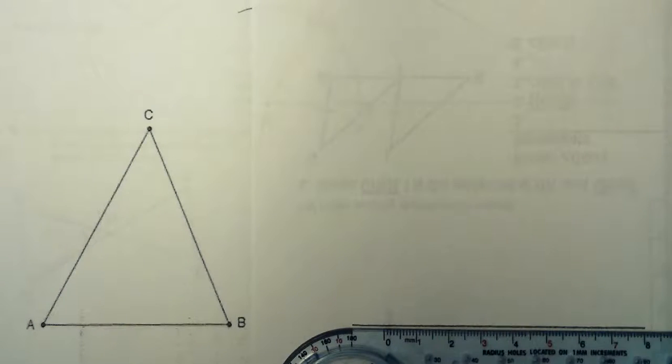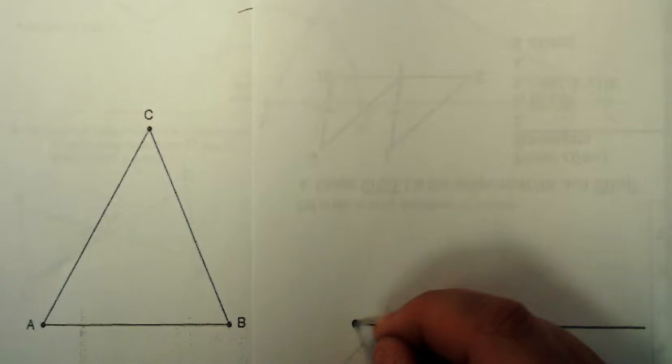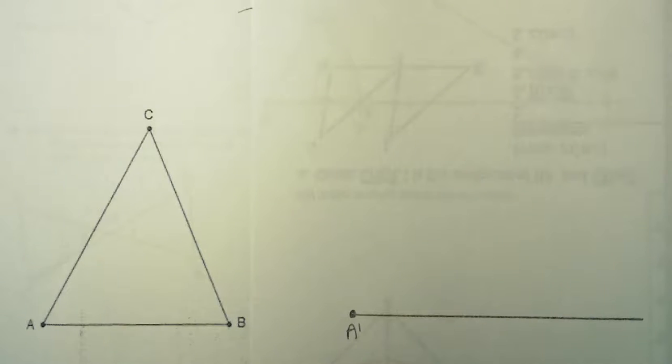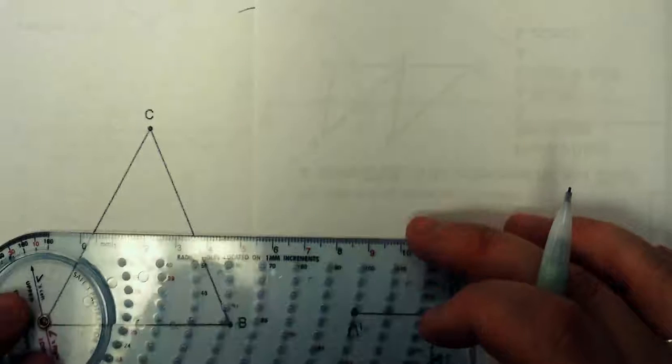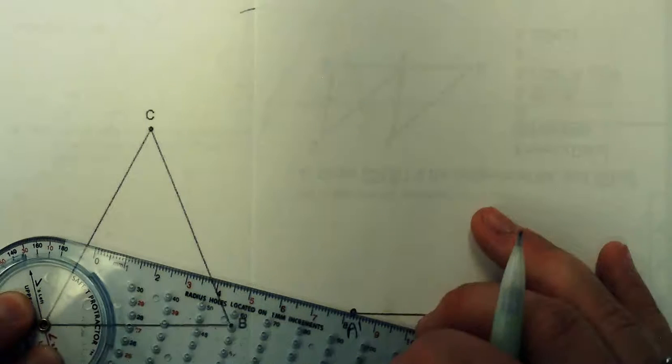First thing I'm going to start out with is copying a side. So just draw a line, and I'm going to call one side A prime. Then all you have to do to copy a side is actually measure it. So I have A in the original, just figure out which hole goes through B.